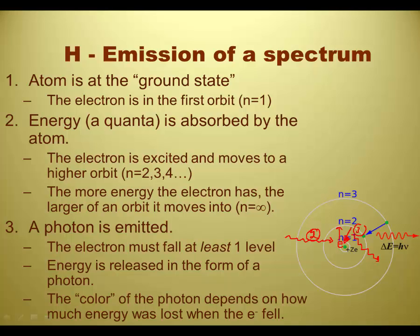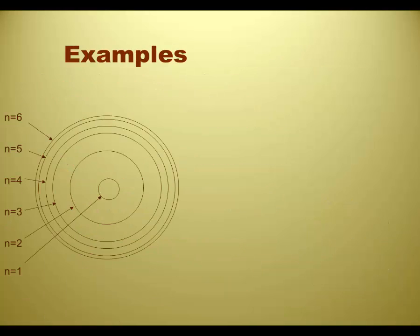And then finally, the color of the photon, the color of the light that's given off, depends on how much energy was lost when the electron fall. Larger falls release larger amounts of energy. They'd be more likely to be things like ultraviolet or x-rays, things on the higher energy end of the spectrum. And shorter falls would be lower energy, so they'd be like on the red or the radio end.